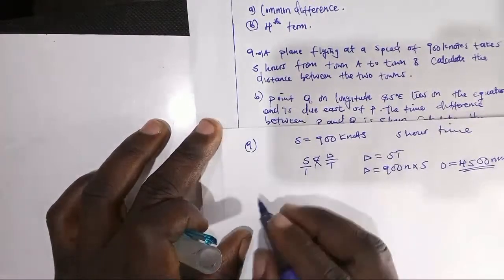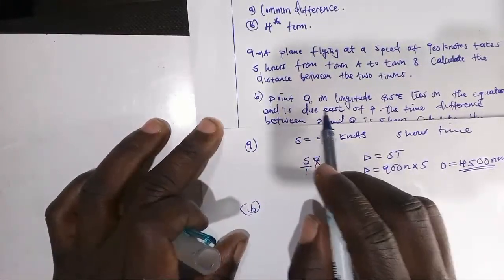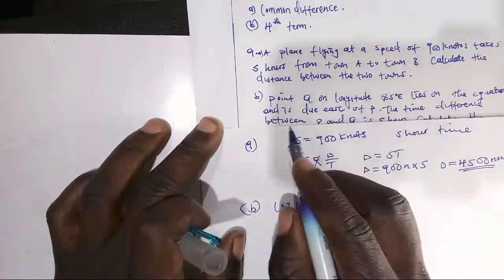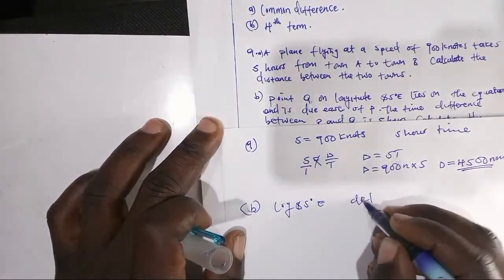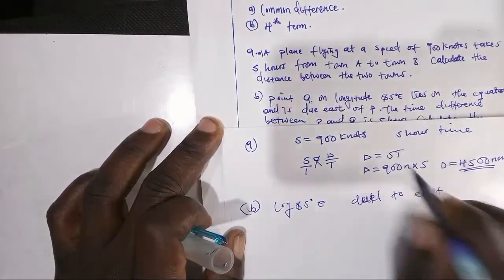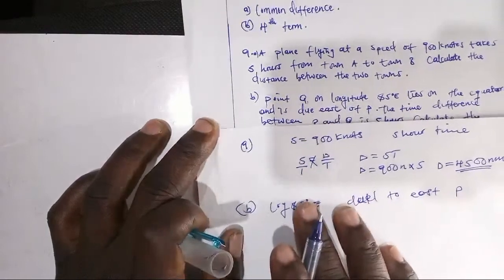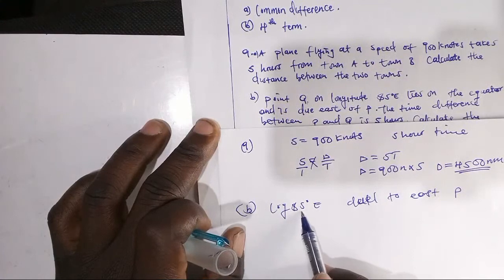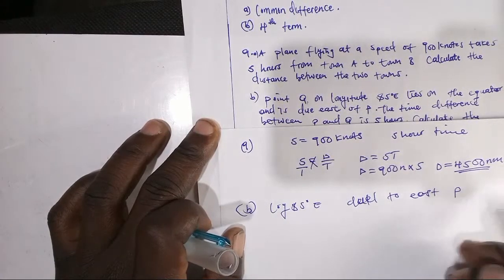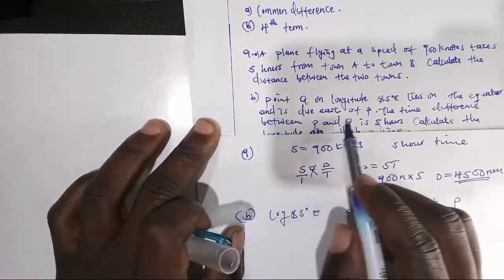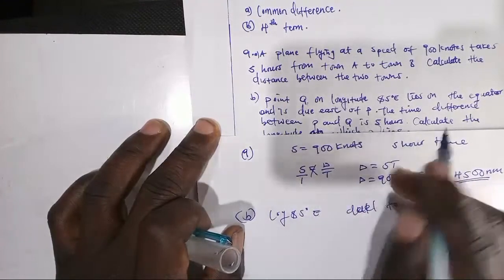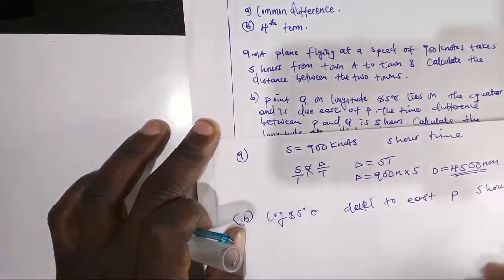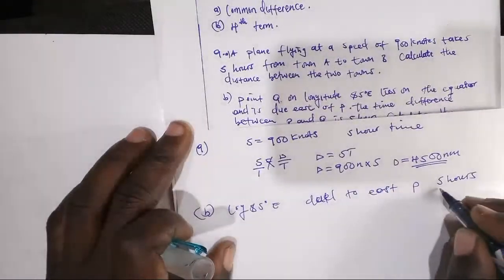For part B, we are told to find point Q on longitude 85 degrees East, which lies on the equator and is due east of P. The time difference between P and Q is 5 hours. For us to solve this, we have to analyze how many degrees correspond to 5 hours.